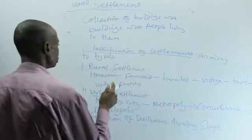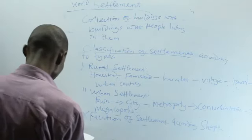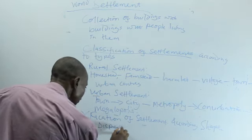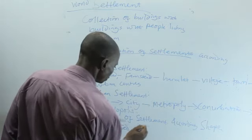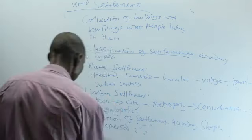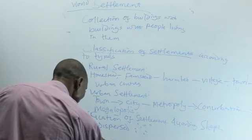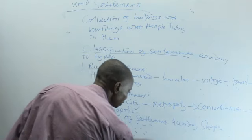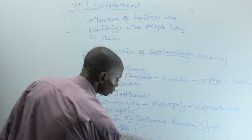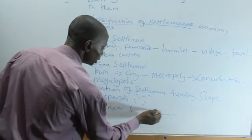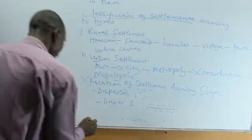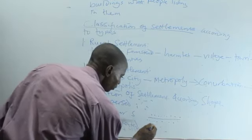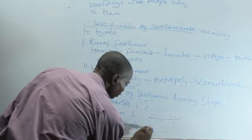Classification according to shape: here we have dispersed settlements — settlements that are spread out. We have linear settlement, which is a settlement found along the transportation network; it can be rail or road. Then we have nucleated settlement, where you have a settlement clustered very closely together.